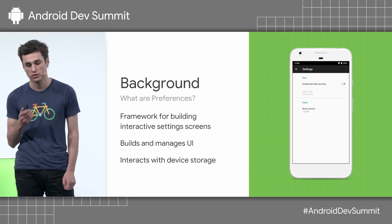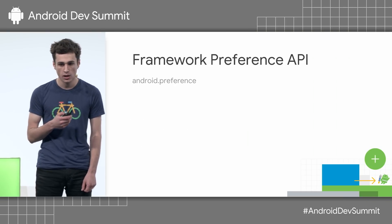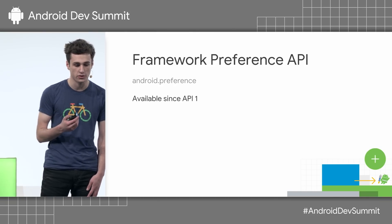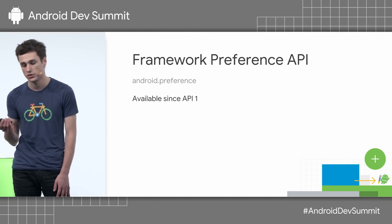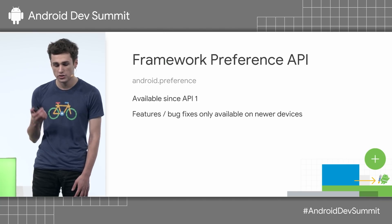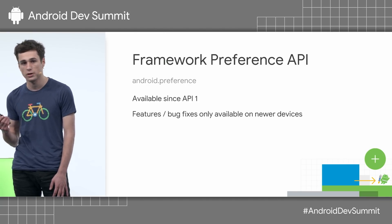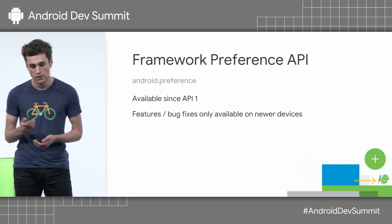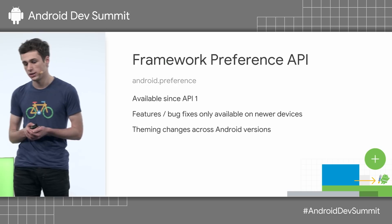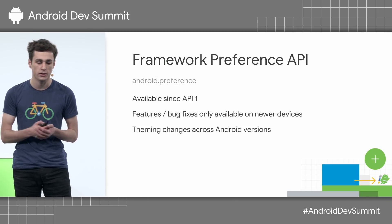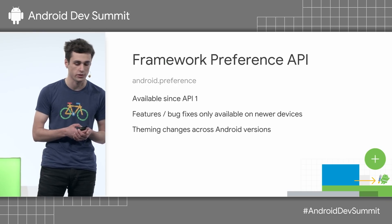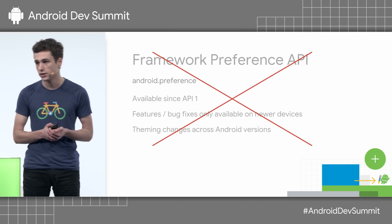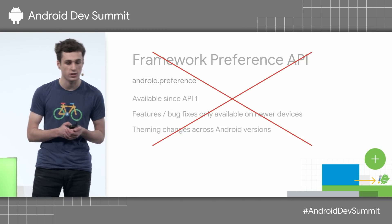Preferences itself currently exist in two separate forms. First, the framework preference API. This has been bundled with the Android framework since the first version of Android, so 11 years ago now. Since it is part of the framework, any new features and bug fixes we add only make their way to the newer versions of Android. And given that design has changed a lot over the last 11 years, the framework API is themed differently depending on which version of Android the device is running on. As a result, we're no longer maintaining the framework API and instead we recommend using the AndroidX library.